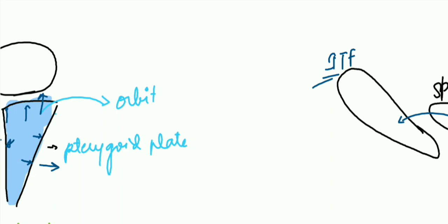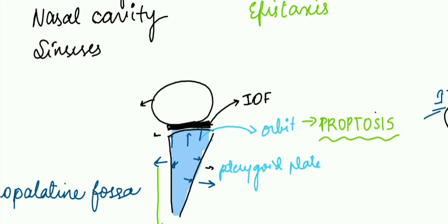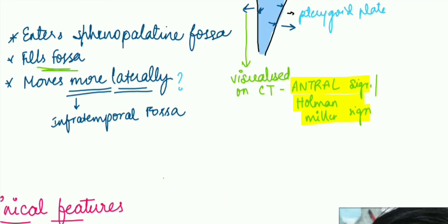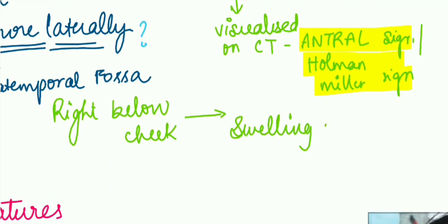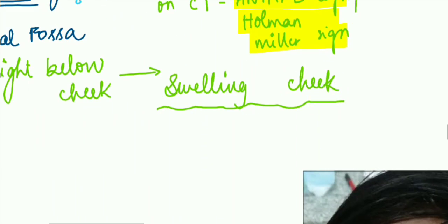What about the orbit? The orbit gets pushed forward, which is called proptosis. This occurs through the inferior orbital fissure. So we are seeing two effects here: one is antral sign and the other is proptosis. What about infratemporal fossa? It lies right below the cheek, so we are going to see a swelling below the cheek.